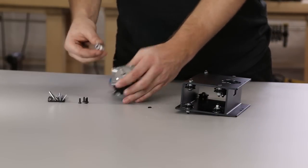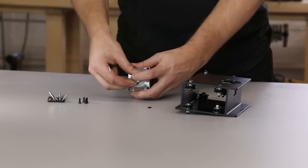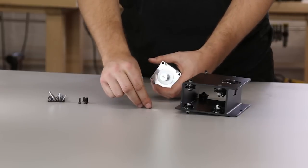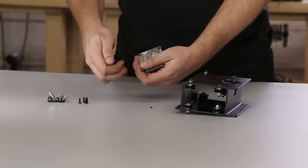Now let's mount your NEMA 23 motor to your X carriage. We're going to start by putting the pulley on the shaft of the motor and we're going to use the set screws to keep it in place.